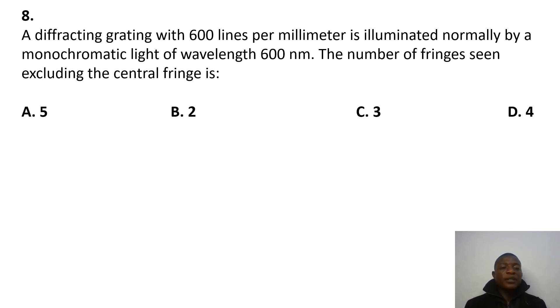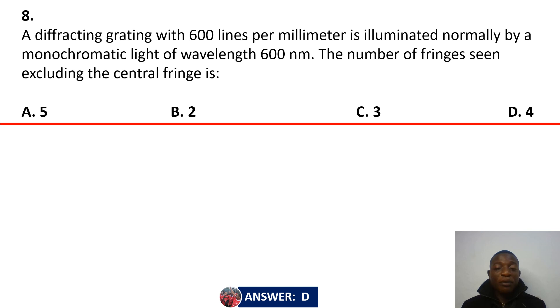Question 8: We have a diffraction grating with 600 lines per millimeter. It is illuminated normally by a monochromatic light of wavelength 600 nanometers. The number of fringes seen excluding the central fringe is. Okay. I fully displayed the answer as D. Well, you can go ahead and try solving the problem. Make sure that you have D. Otherwise, you check out why it's actually D by my solving. So the normal general diffraction grating equation is, of course, d sin theta equals m lambda. Right. So you realize that our M there, which is the order, the number of possible orders you can get from that diffraction grating experiment.